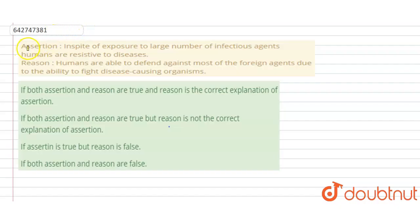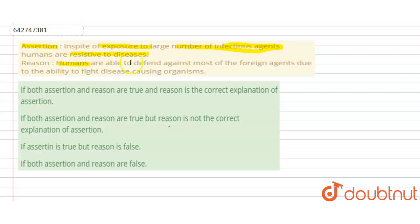The question is an assertion-reason type. The assertion states that in spite of exposure to a large number of infectious agents, humans are resistant to diseases. The reason states that humans are able to defend against most of the foreign agents due to their ability to fight disease-causing organisms.